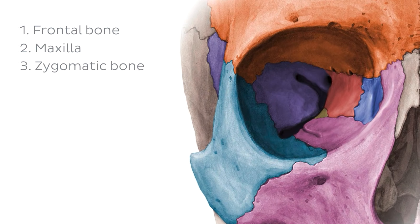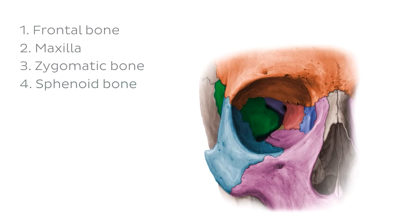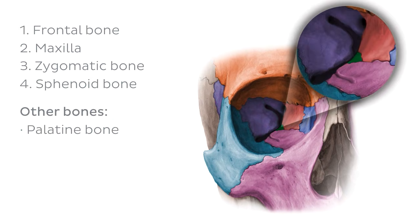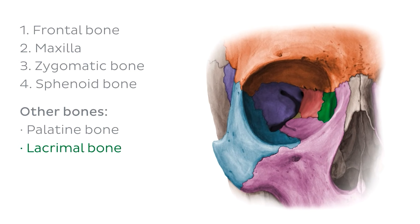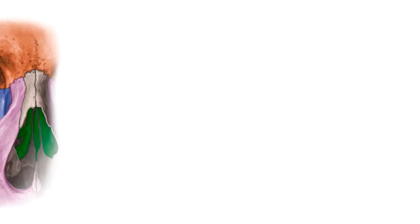If we move further into the orbit, we'll find several other bones that also contribute to its walls. The sphenoid bone, seen here along the posterior wall of the orbit. We also have a number of smaller bones which contribute to the inner surfaces of the orbit. These are the palatine bone, the lacrimal bone, and the ethmoid bone. We'll be looking at each of the bones in a lot more detail, especially the parts that contribute to the socket. So let's start with our first bone of interest, the frontal bone.